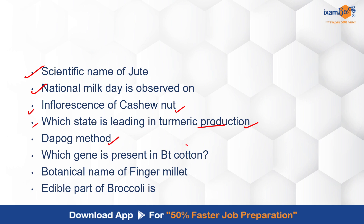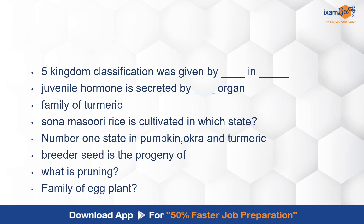There was a question related to the Depok method. Then, which gene is present in BT cotton — there are two genes: cry1Ac and cry2Ab, so you have to choose based on the options. The botanical name of finger millet is again an easy one. The edible part of broccoli — every part of broccoli is edible. The five kingdom classification was given by Whittaker. When I saw this question, I was thinking whether this was a CWC or NSC examination, because such questions are generally asked in the CWC exam which also has botany and zoology.